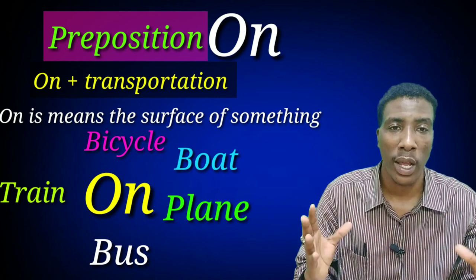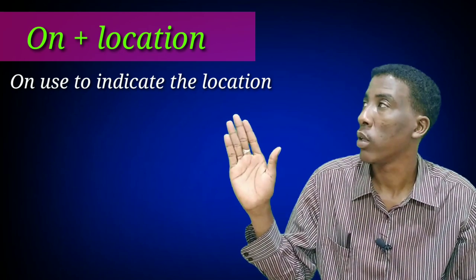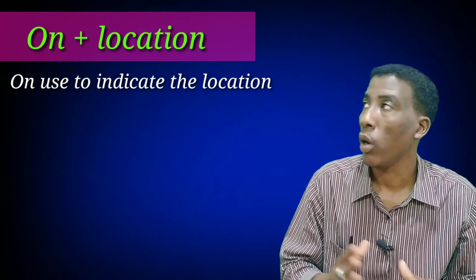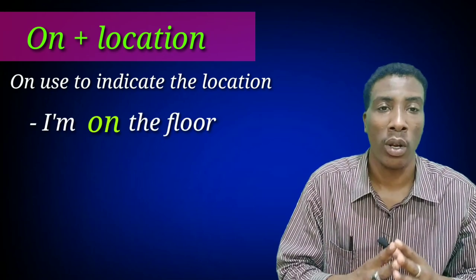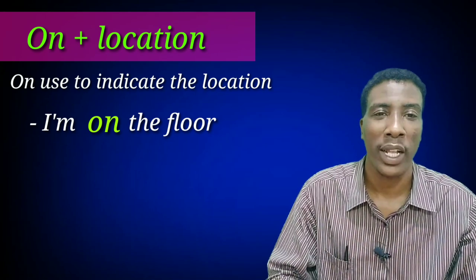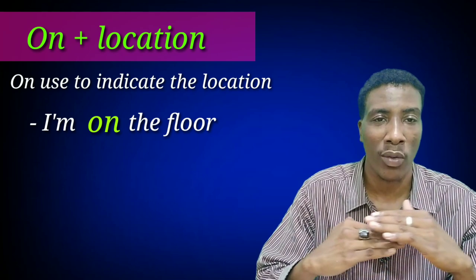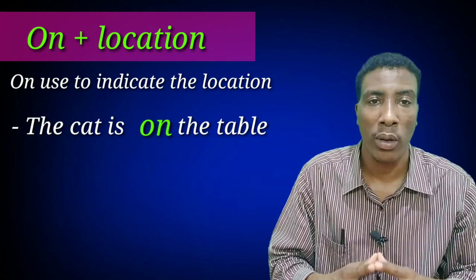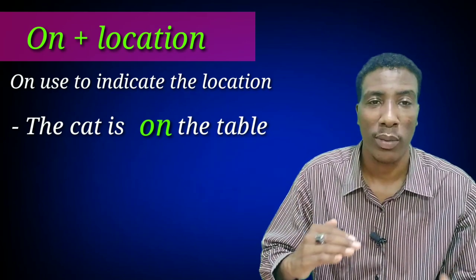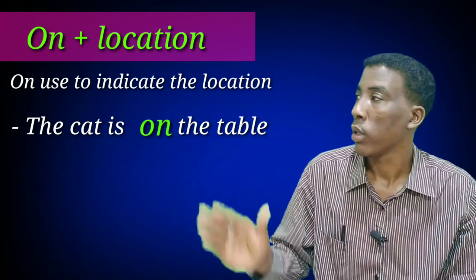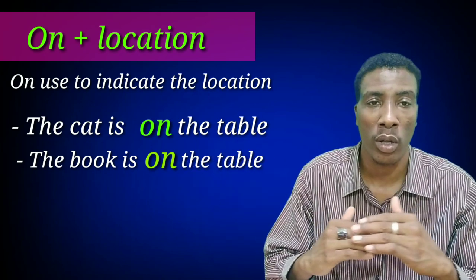Now 'on' with place and location. 'On' indicates position on a surface. For example: 'I am in the room, on the floor' — 'in the room' but 'on the floor.' 'On' means the surface of something. Another example: 'The cat is on the table' — meaning on top of the table. 'The book is on the table' — the book is on top of the table.